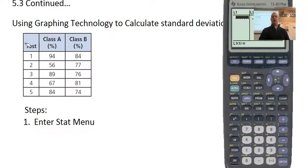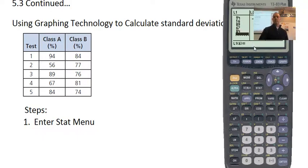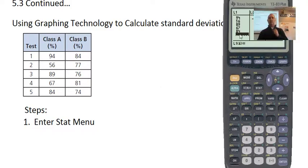Let's go to Class A and type these numbers in. Just put 94, it'll show up that the first item in List 1 is 94, then hit enter. Go through and put the other ones in: 56, 89, and all the rest. If you want to clear your list, highlight L1 by going all the way up to the top, then clear it.